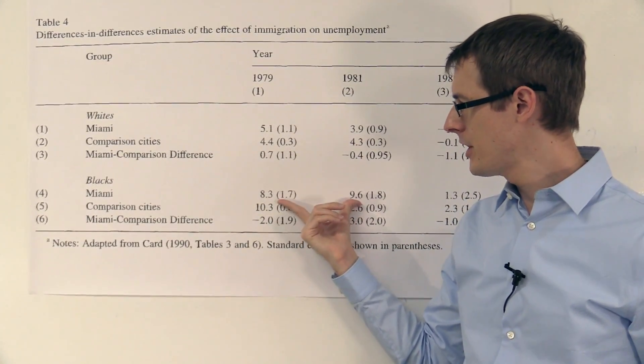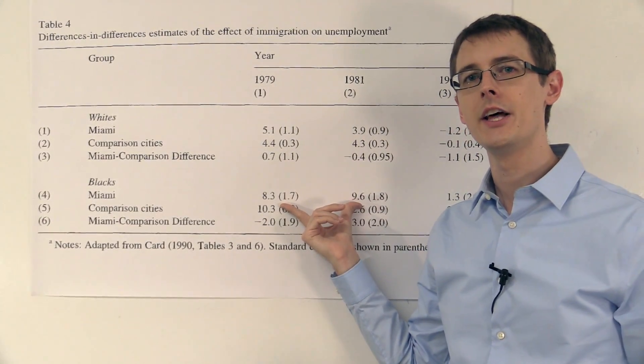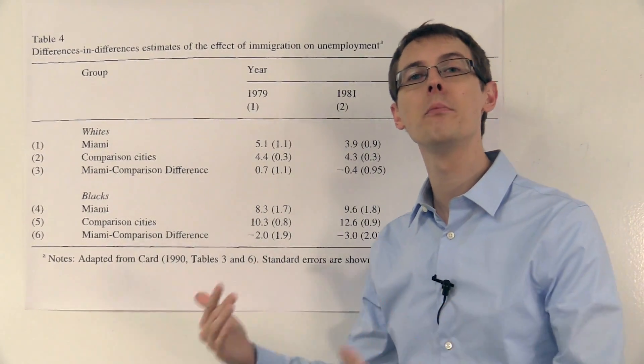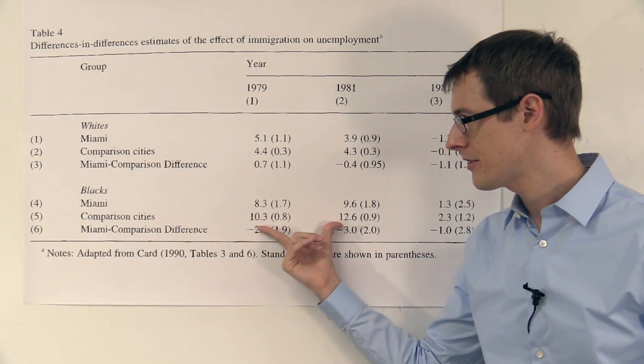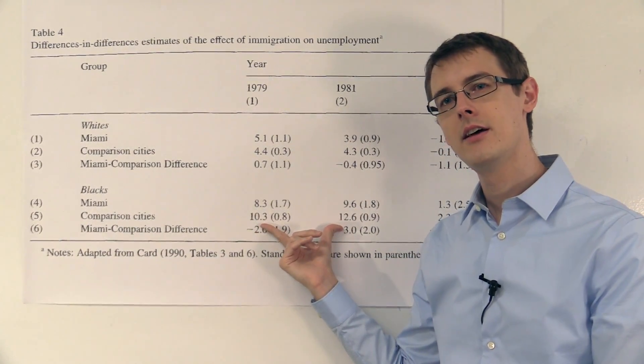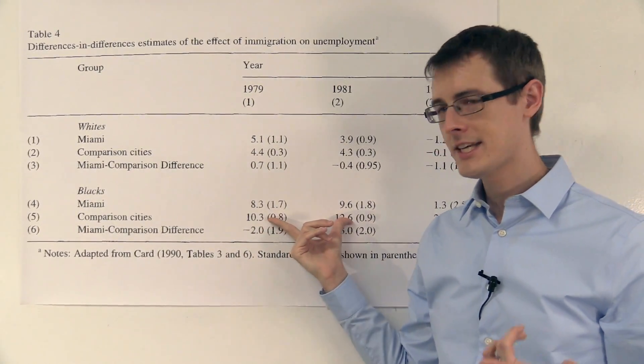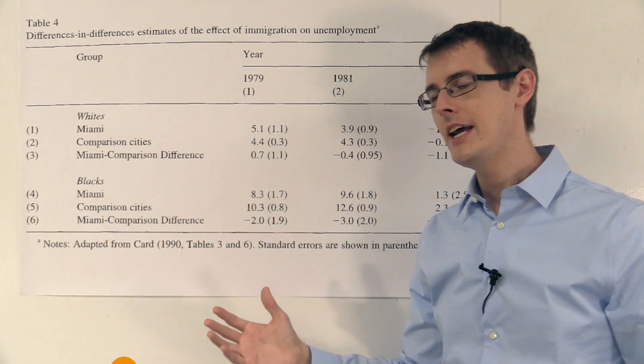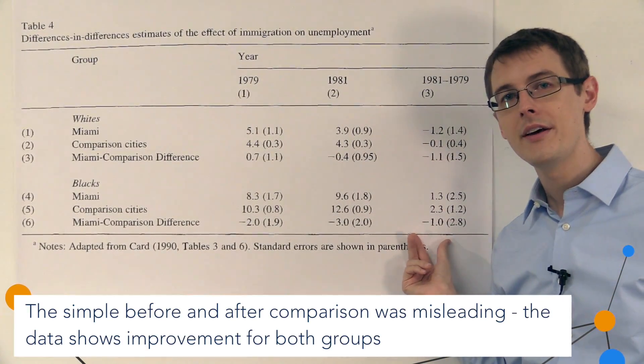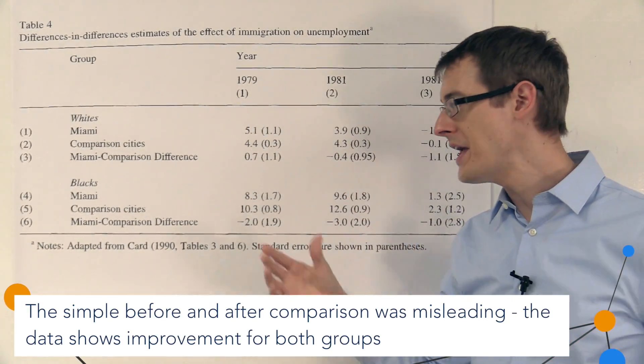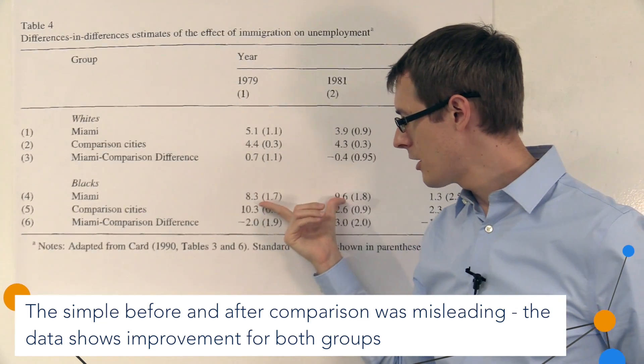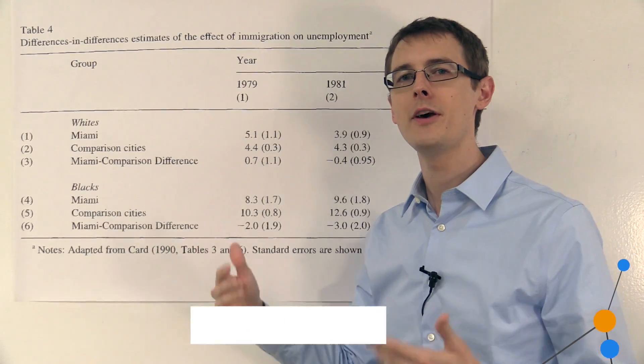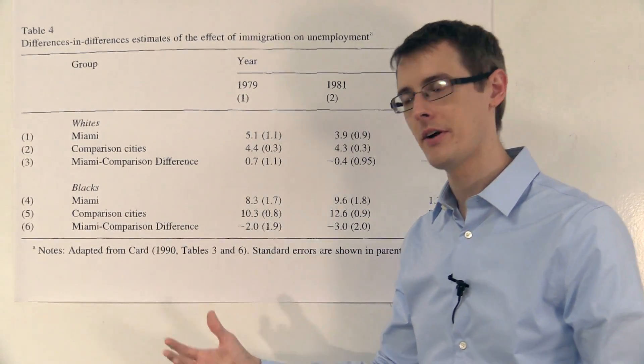Well, in Miami, there was also an increase in the unemployment rate from 8.3 to 9.6. But it didn't increase quite so much as how much it increased for the comparison cities. So what's the difference that can explain this? Immigration. So immigration is actually lowering the unemployment rate. So it's preventing the unemployment rate for blacks in Miami from going higher than it would have if immigration hadn't happened.